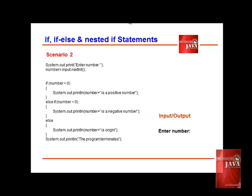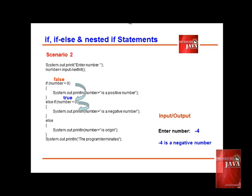What if we enter negative 4? Scenario two: we enter negative 4, the program accepts negative 4 and stores it in the variable number. We validate number — is it greater than zero? False. It will jump to else-if and test if number is less than zero. Of course, that will be true, and it will display 'negative 4 is a negative number.' After that, it will jump to 'the program terminates' and display it.